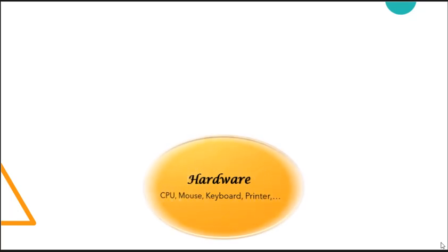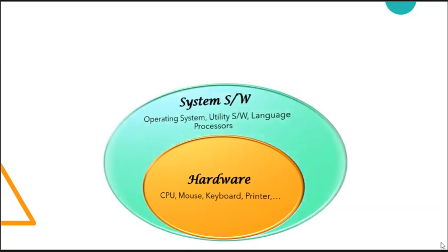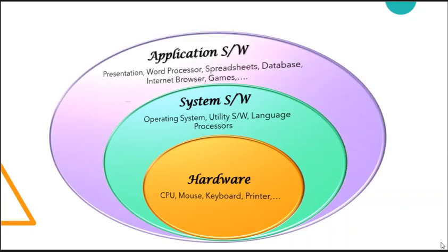Now let's understand the connectivity between system software, application software, and hardware. System software is used for operating computer hardware, whether it is an input device or output device. On the other hand, application software is used by users to perform a specific task — it cannot interact directly with the hardware and cannot run without the presence of system software. We need system software to use the hardware effectively and efficiently. Basically, system software is essential for a computer to work, and application software is the additional software required for the user to perform a specific job.